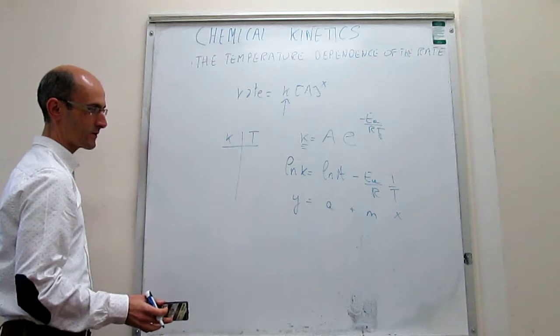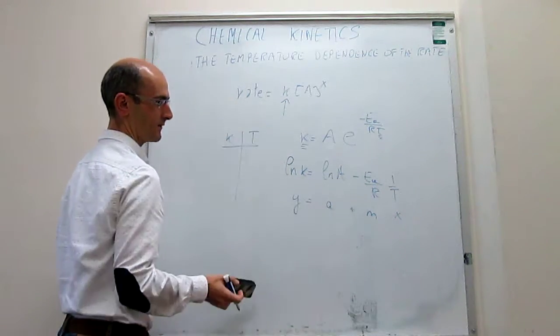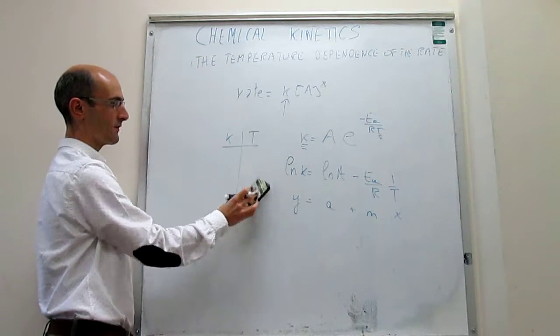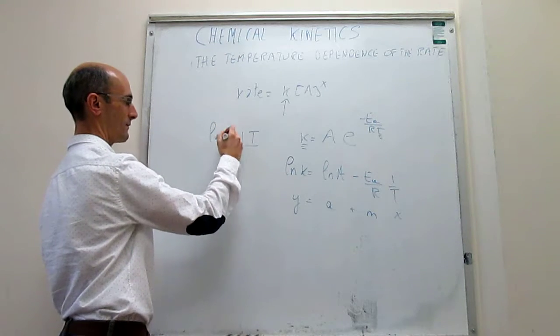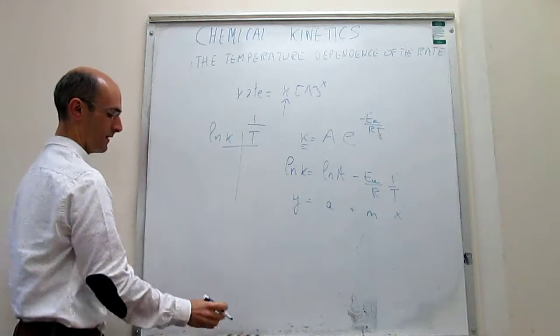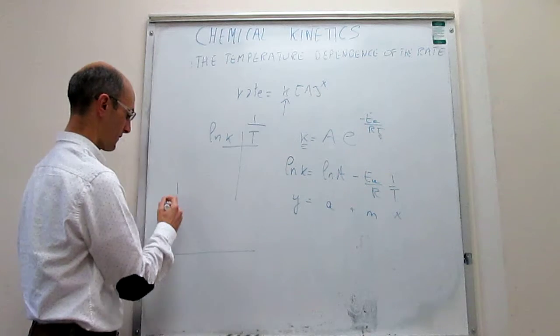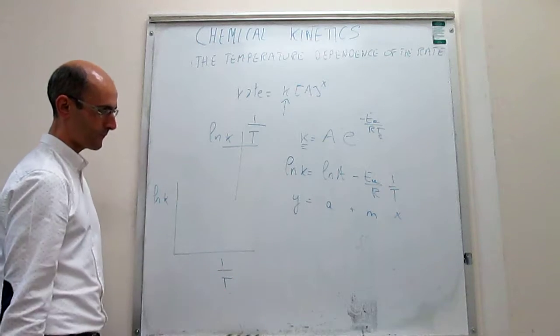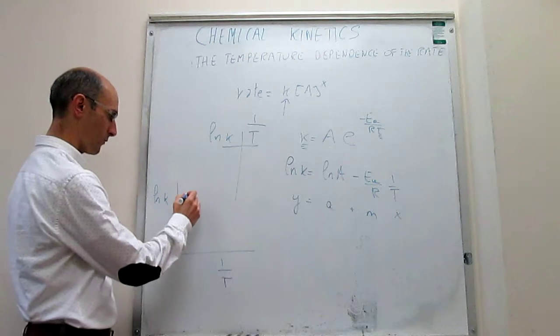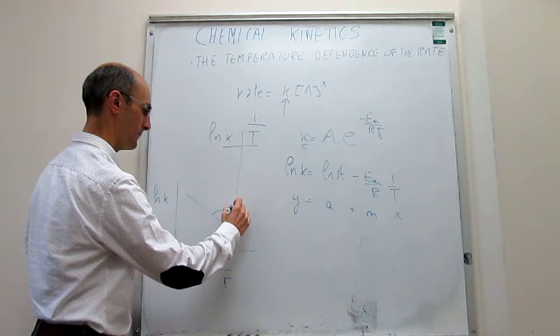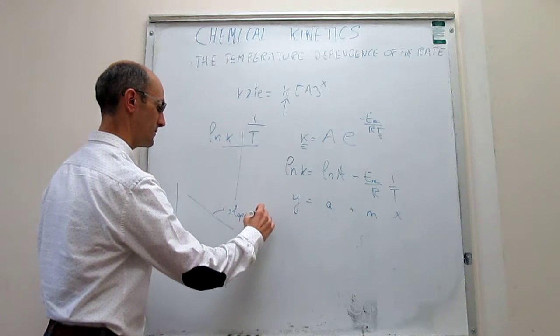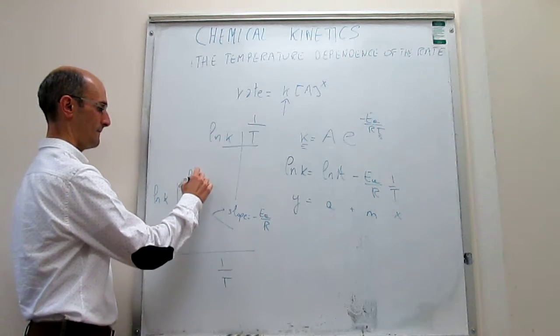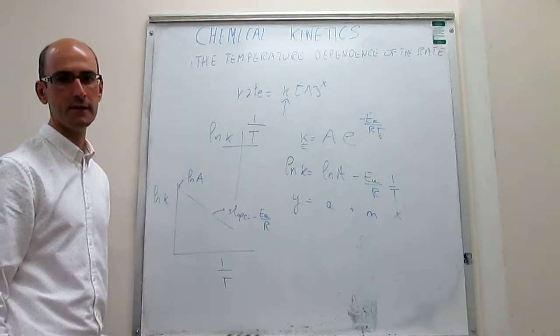So this is the way that we're actually going to be generating these values of the activation energy and the pre-exponential factor. We measure the rate constant as a function of temperature, then we take logarithms of this and the inverse of the temperature, and when we plot natural log of k as a function of 1 over T, we should expect to find a line, in which the slope is going to be equal to the minus activation energy over R, and this intercept is going to provide us the natural log of the pre-exponential factor.